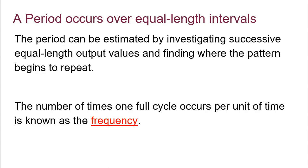The number of times one full cycle occurs per unit of time is known as the frequency. The formula for frequency is simply one divided by your period length. So once you identify the length of your period, 1 divided by that period length gives you the frequency — how many full cycles occur per one unit of time. The next couple of examples will make this easier to understand.